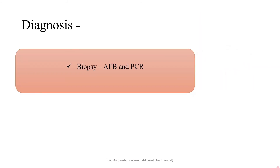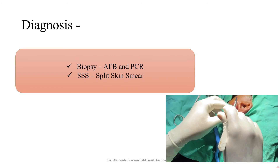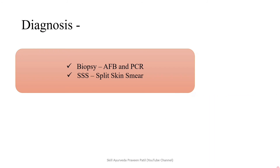Coming to diagnosis: biopsy, acid-fast bacilli staining, polymerase chain reaction, and split skin smear are used. The common site for split skin smear is the ear pinna lesions, where a small slit is taken and sent for serology. In split skin smear, we should not get blood — we should get serum. Morphological index studies living bacteria, while bacteriological index studies both living and dead bacteria. Morphological index is commonly used for research purposes.